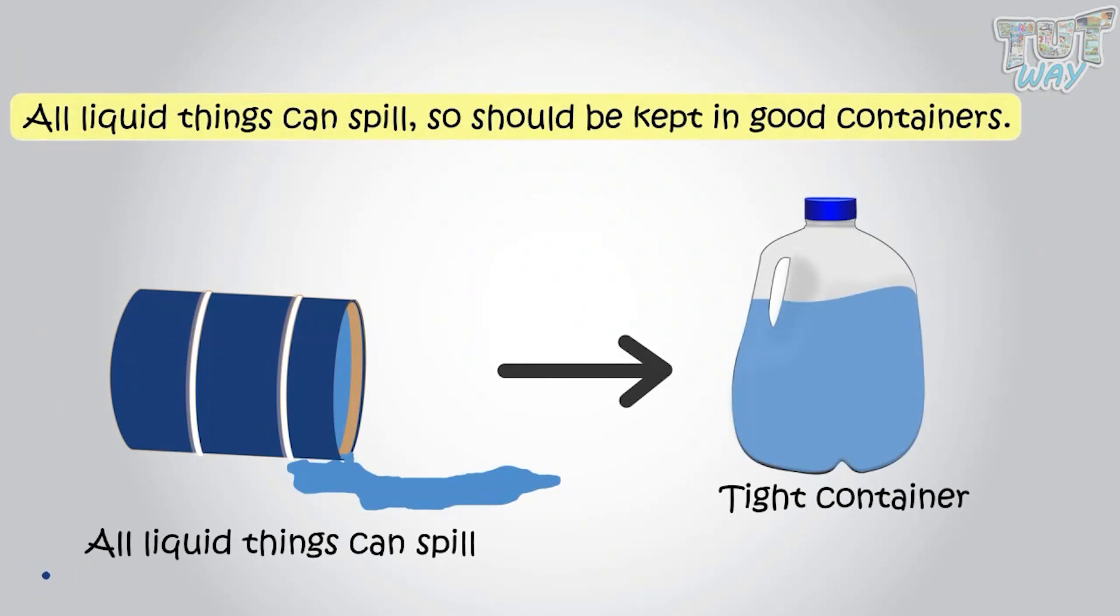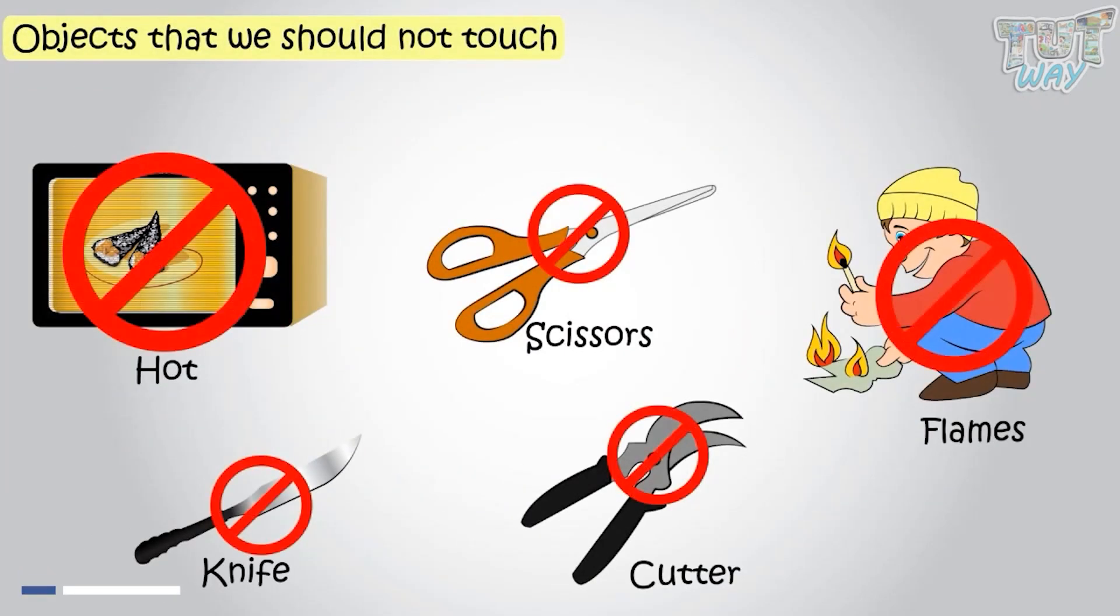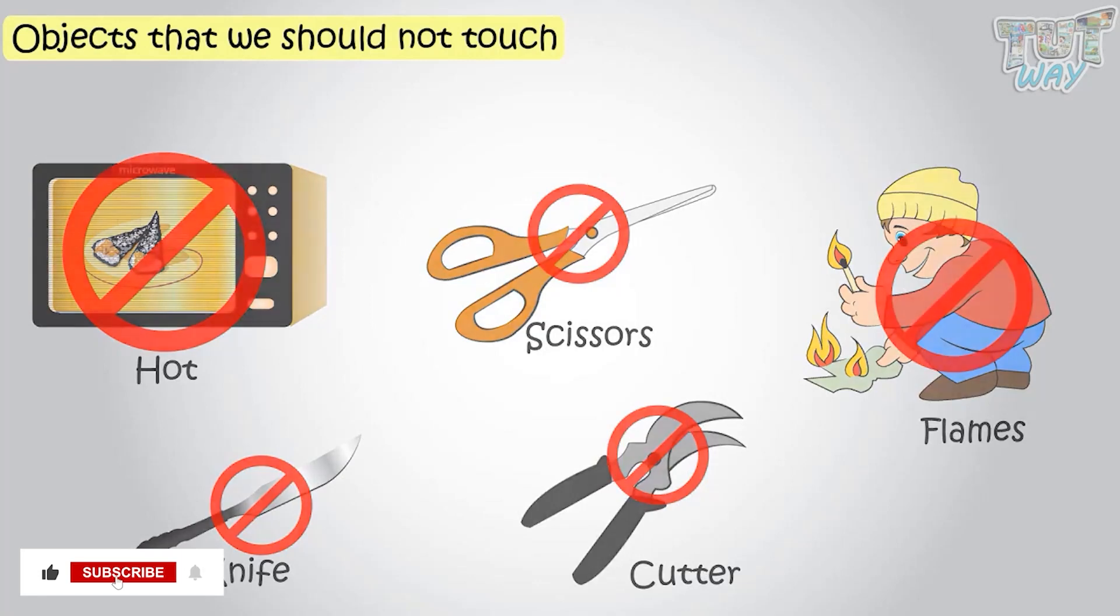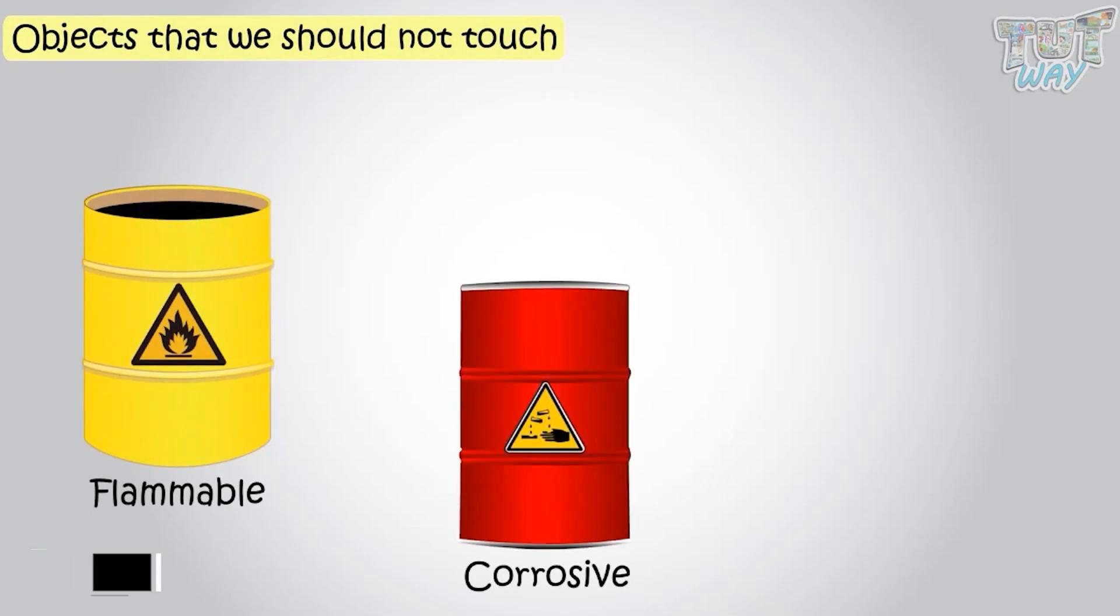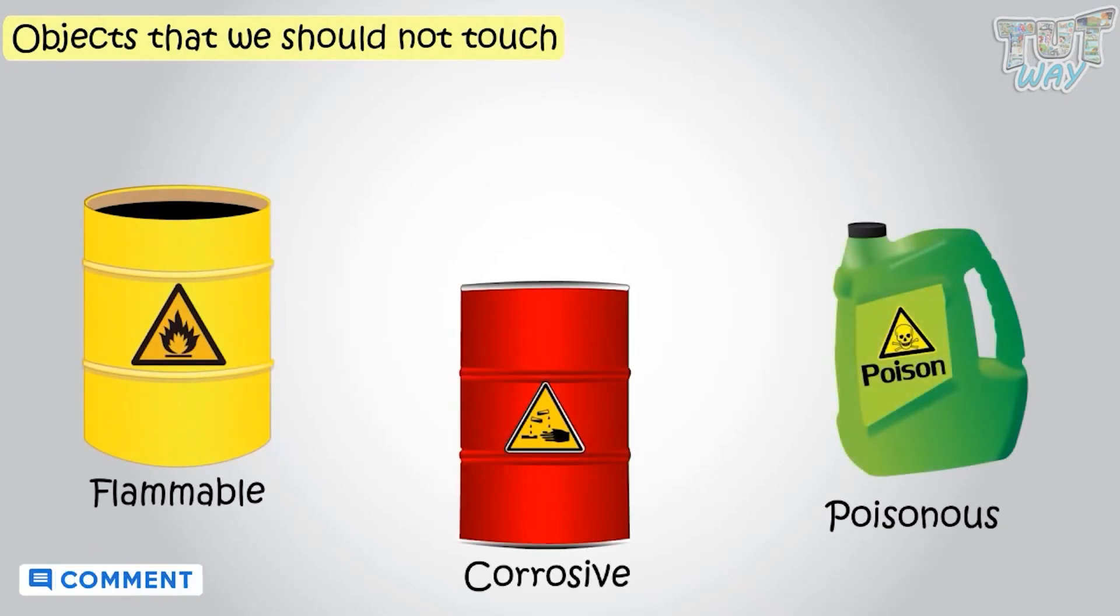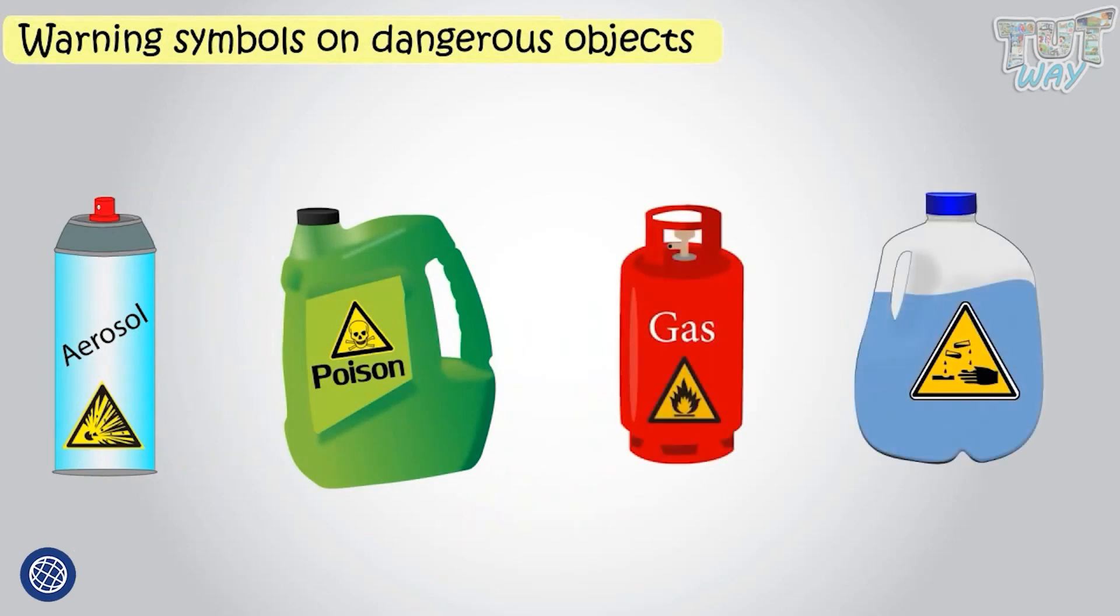There are also some objects at our home that we should not touch. That is, let only your parents use them. Do not touch them when they are not home. Now let's see which type of things we should not touch. There are various things on which various symbols are made that tell us that those objects are dangerous for us. Now let's see some warning symbols that can be there on some liquids or solids.